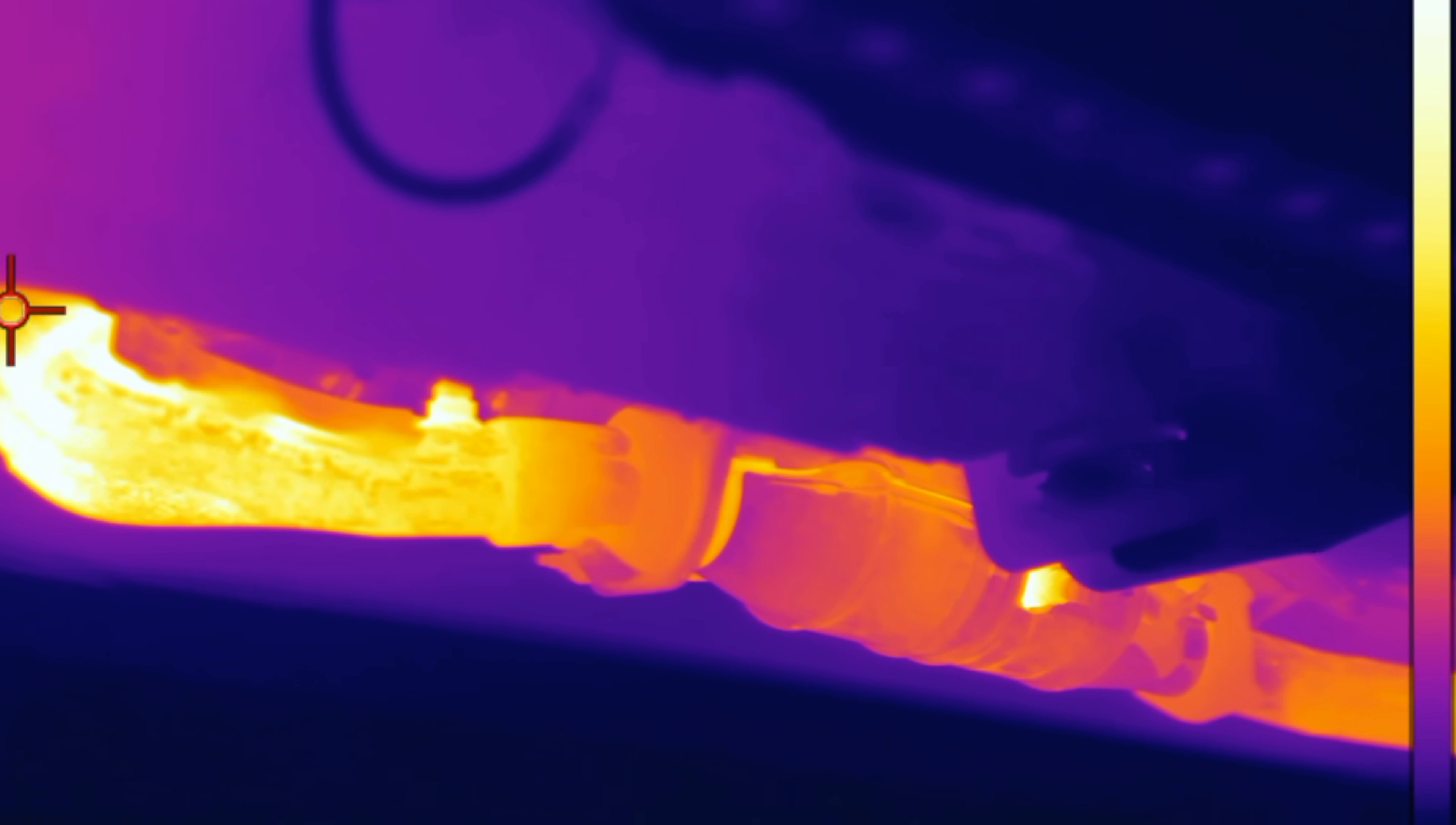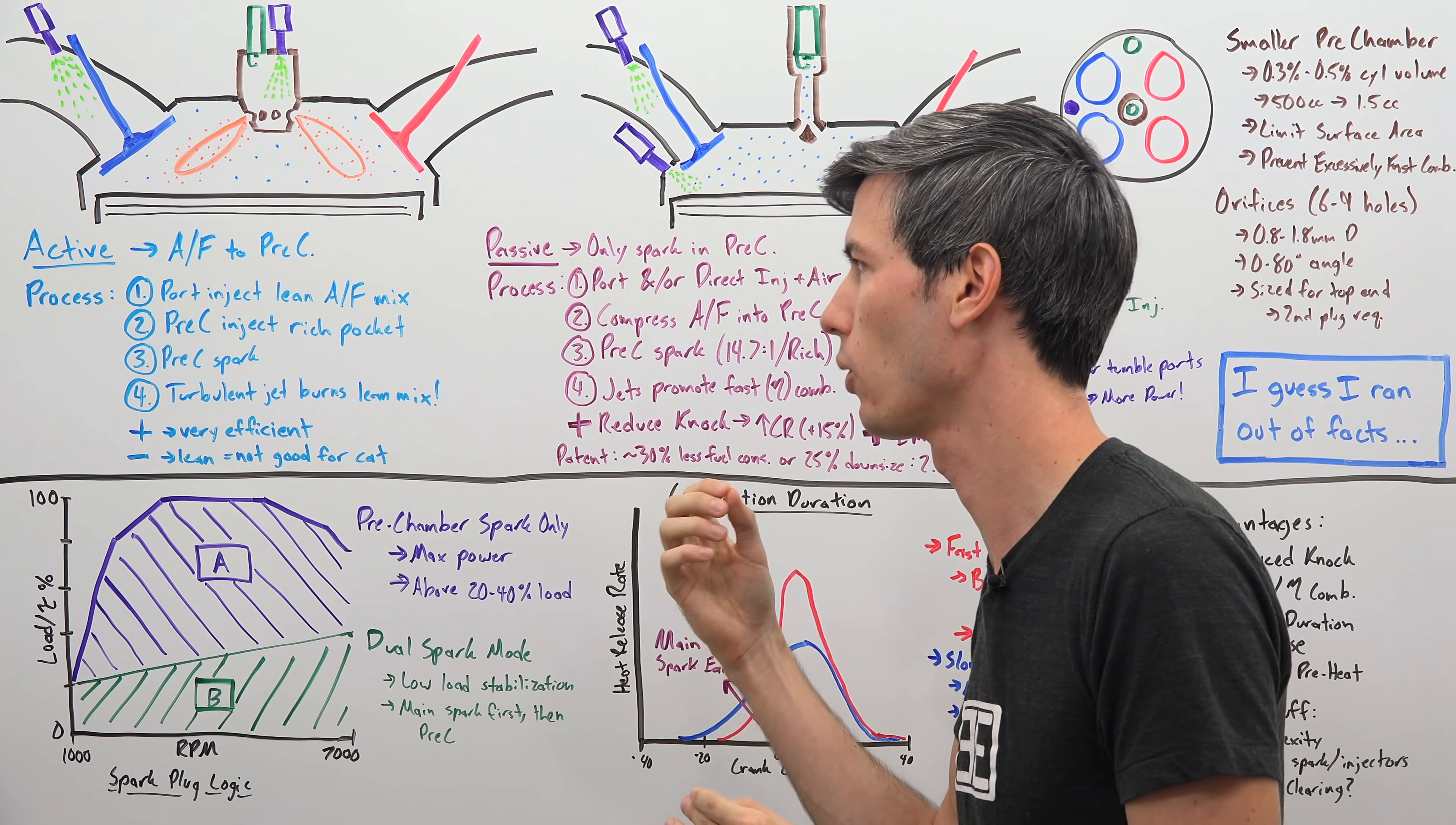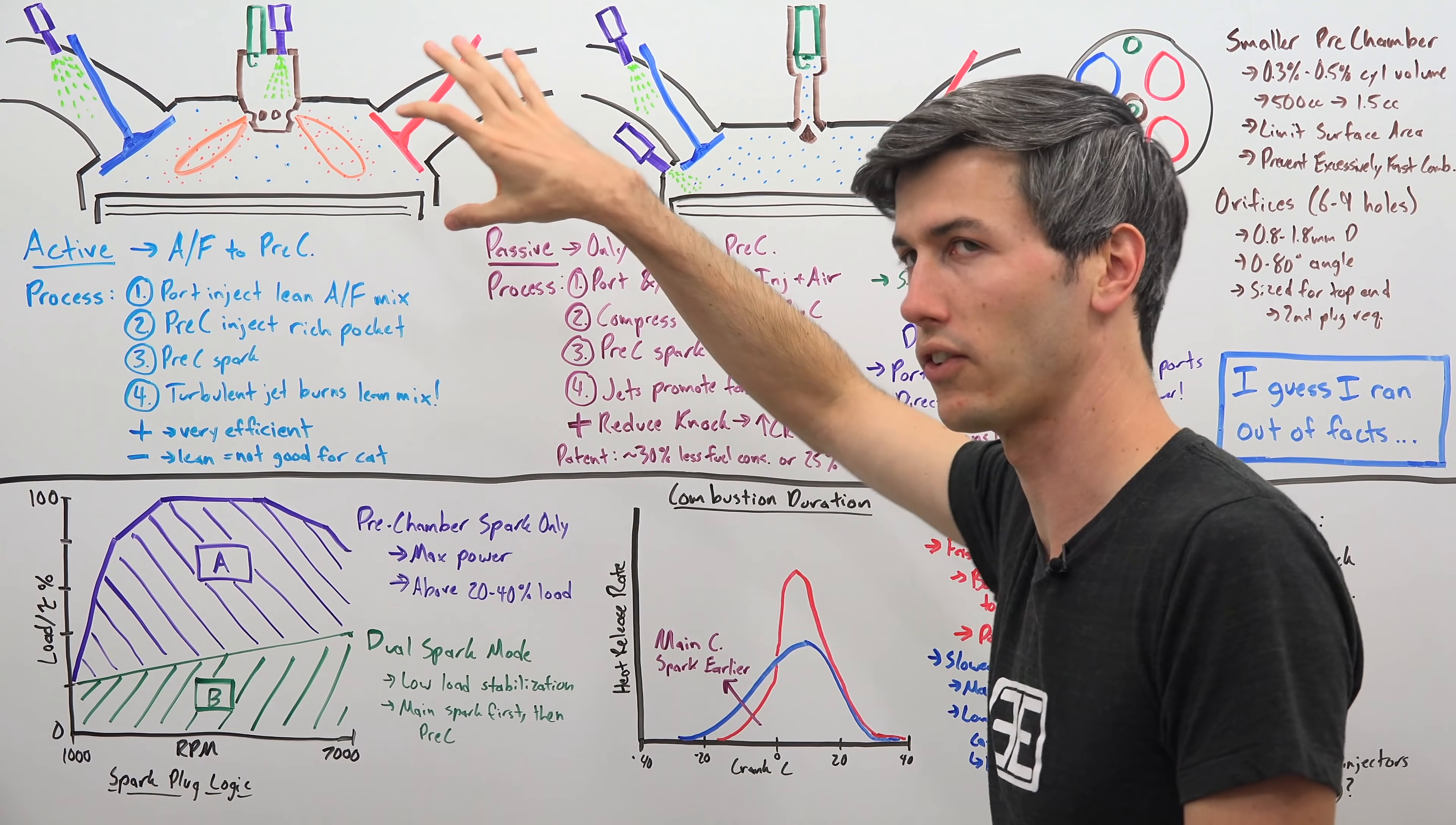Now the challenge here is that for catalytic converters, which of course you need on an emissions-compliant road car, they don't like lean air-fuel mixtures. They like it when the air-fuel mixture is right at stoichiometric ratio 14.7 to 1. That is where catalytic converters operate in their most efficient region. And so because of that, using something like this is very difficult to do in a road car from an emissions standpoint.